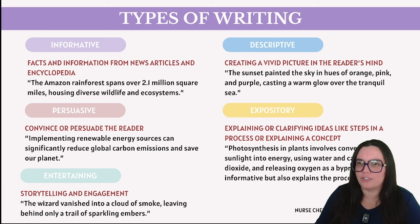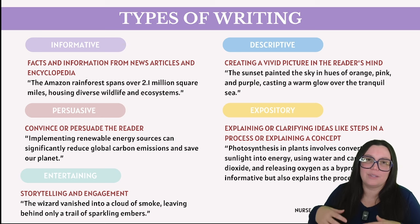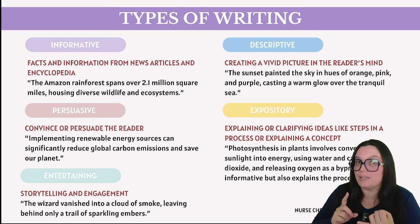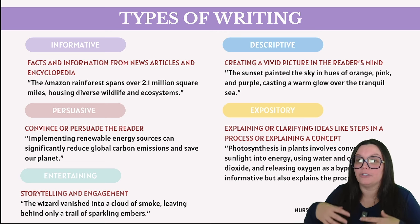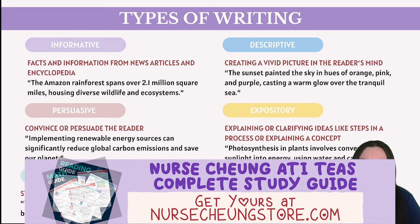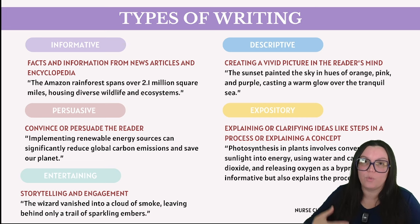Descriptive writing paints a picture in the reader's mind, describing and detailing a scene, person, place, or object so the reader can visualize and experience it. It uses sensory details, figurative language like similes and metaphors, and evocative descriptions focused on the five senses: sight, sound, smell, touch, and taste. You'll see this in literature, fiction, travel writing, nature writing, and personal essays. Example: 'The sunset painted the sky in hues of orange, pink, and purple, casting a warm glow over the tranquil sea' — it paints a vivid picture.